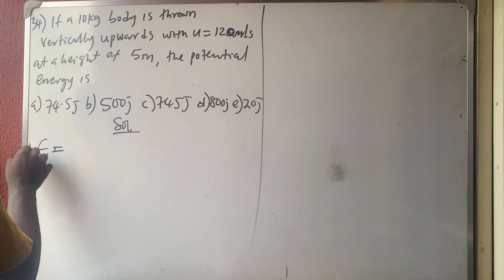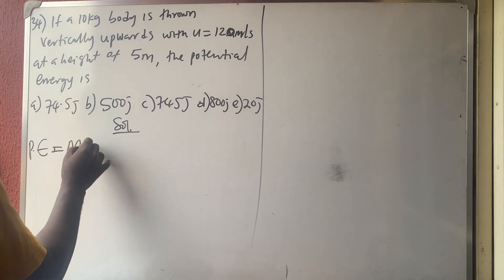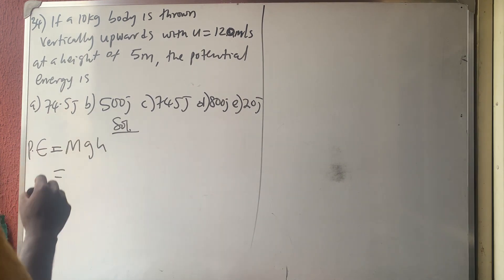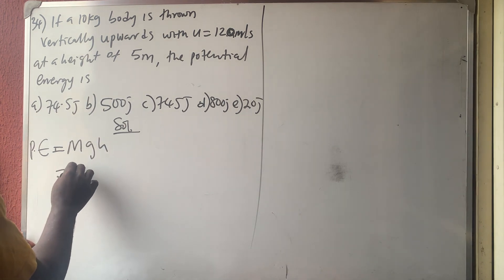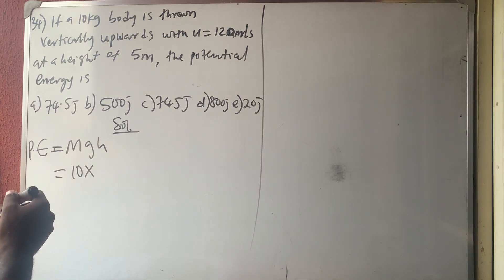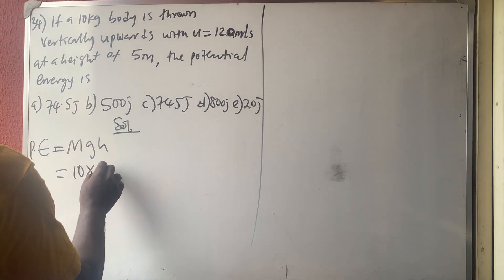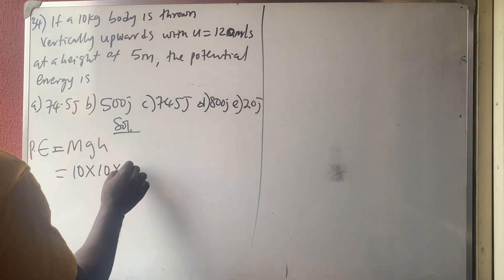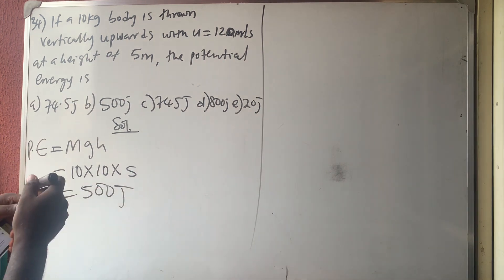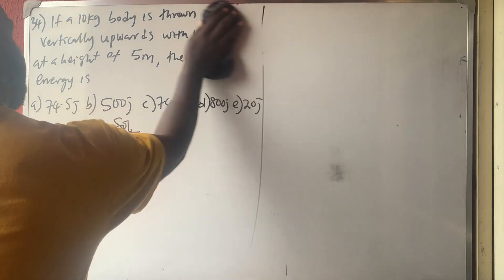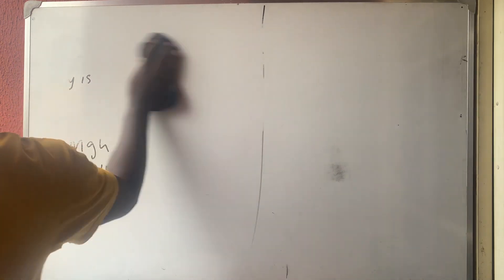Potential energy equals mgh. The mass is 10 kg, acceleration due to gravity is 10, and height is 5 meters. So PE = 10 × 10 × 5 = 500 joules. The answer is option B.